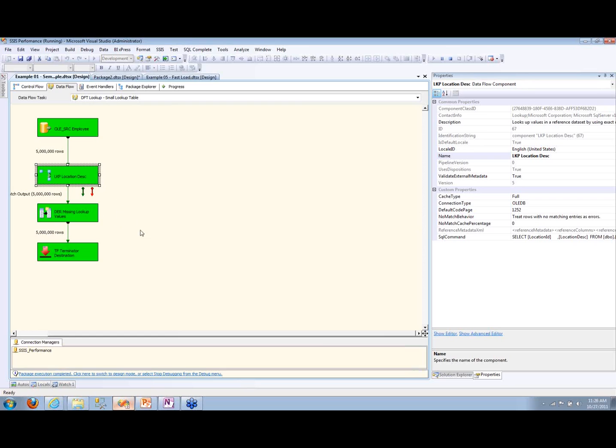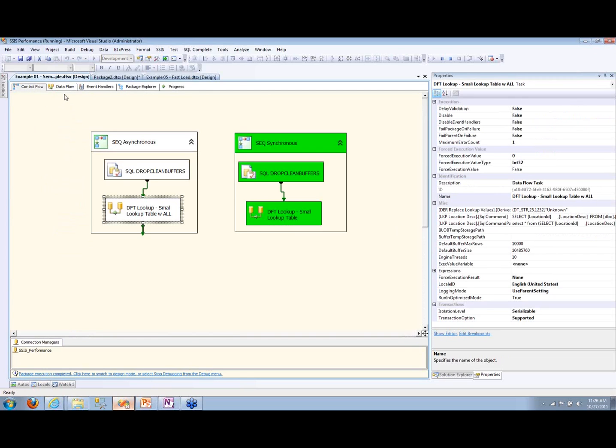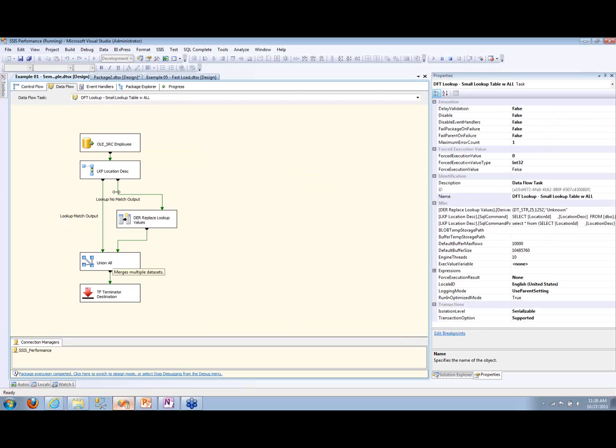And so you'll go through several of these lookups, bang, bang, bang, bang. And if I followed the pattern of the other one where I'm redirecting, doing a lookup, going back, I'm going to be constantly doing these union alls to get the data back together. The union all is an asynchronous transformation and it's going to slow things down.